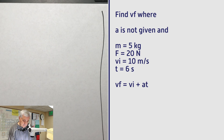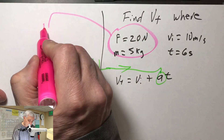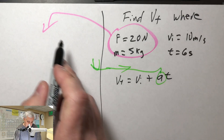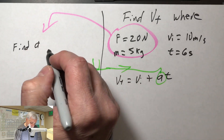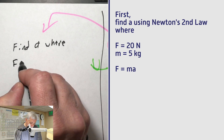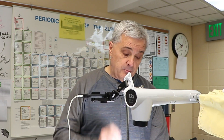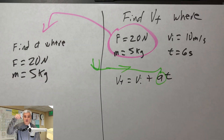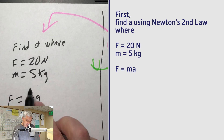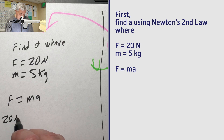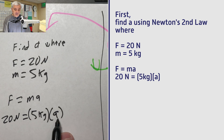The problem is we don't have an a. So we're going to have to come over here and get us an a. We're going to take the F and m variables and do something with that — we need to find a. Find a where F equals 20 newtons and m equals 5 kilograms. Using F equals ma: 20 newtons equals 5 kilograms times a.